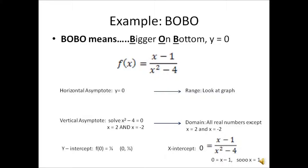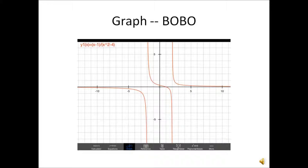Let's look at an example of this BOBO graph. As you can see, this is a complicated-looking function. You may be saying the graph never crosses the asymptote, and it's true that the graph does not cross the horizontal asymptote — but that only happens as the values of x get very large, close to infinity, or very small, close to negative infinity. This middle part of the graph does actually cross y equals 0. You will see the two vertical asymptotes at x equals negative 2 and at x equals positive 2.